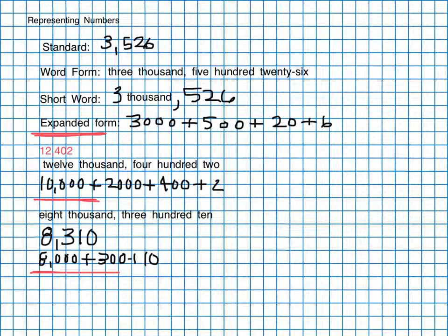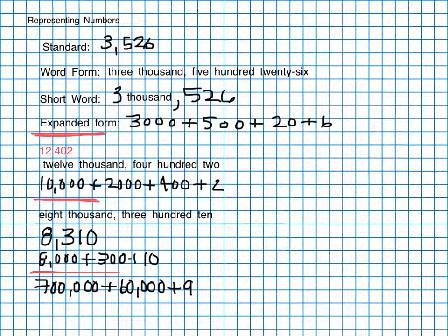Our final one we're going to give to you in expanded form, and that is seven hundred thousand plus sixty thousand plus nine. We want this one in standard form and word form. And I'll actually when I solve it, I'll put it over here, but why don't you pause the video, solve it, and then check and see how you did.